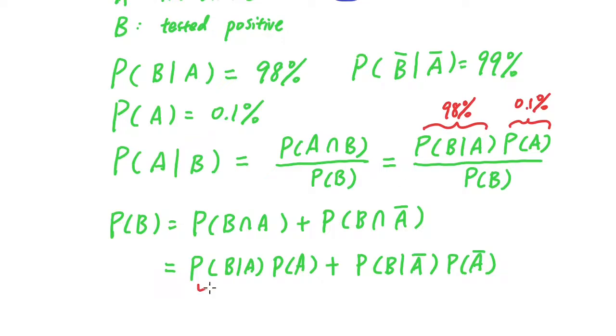Again, we have this at 98 percent. P(A), which is the probability that someone has the disease, is 0.1 percent.